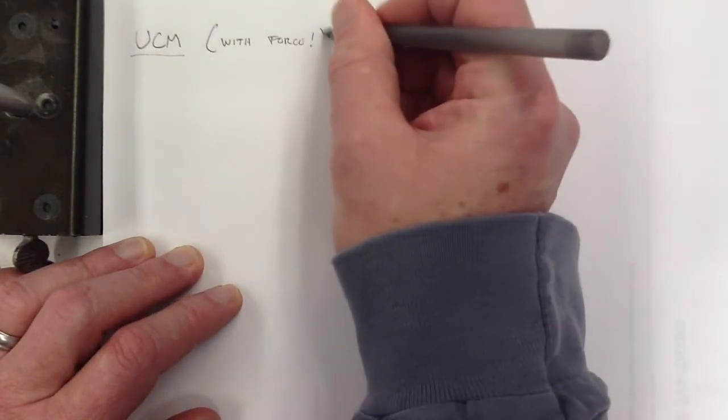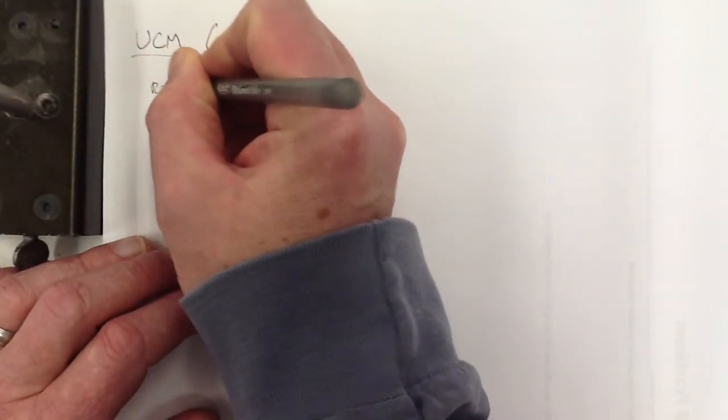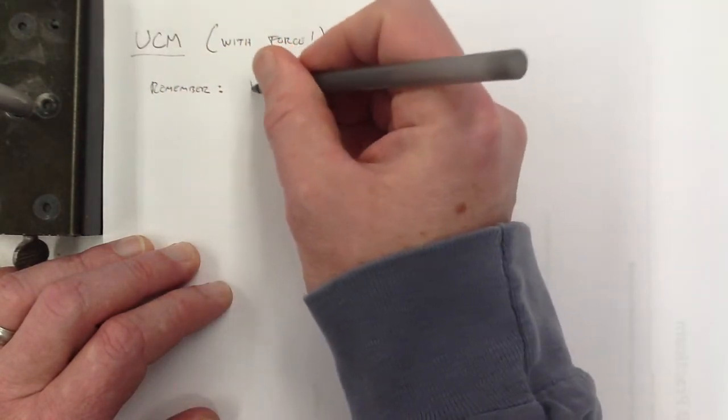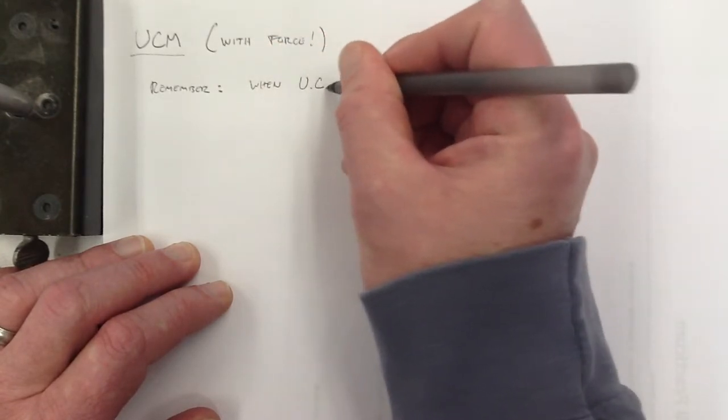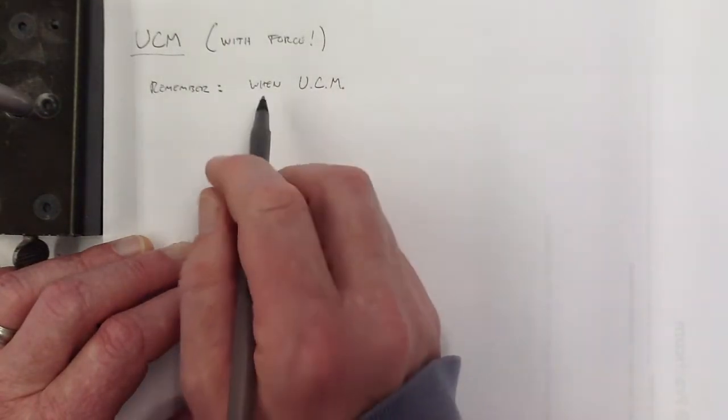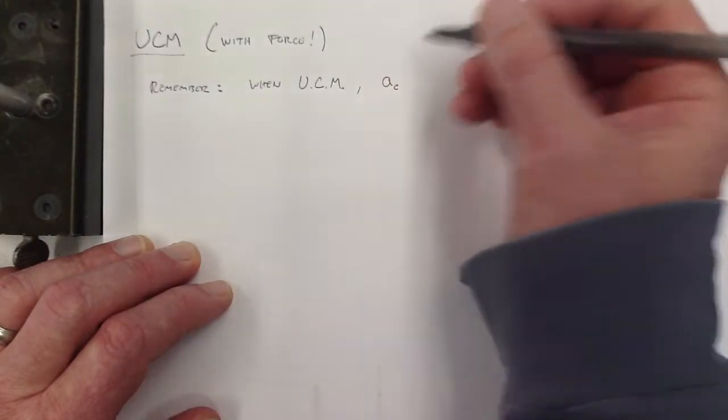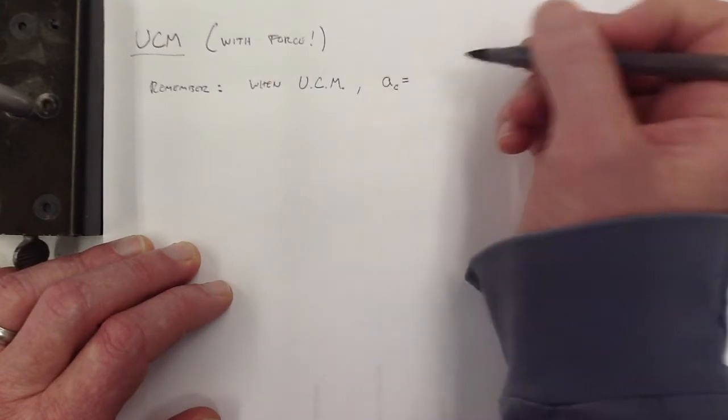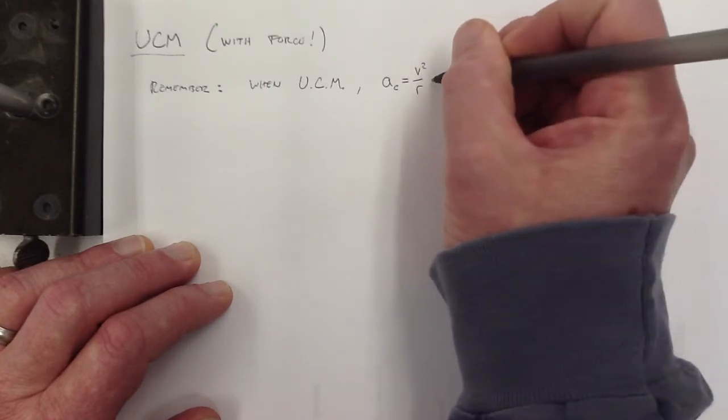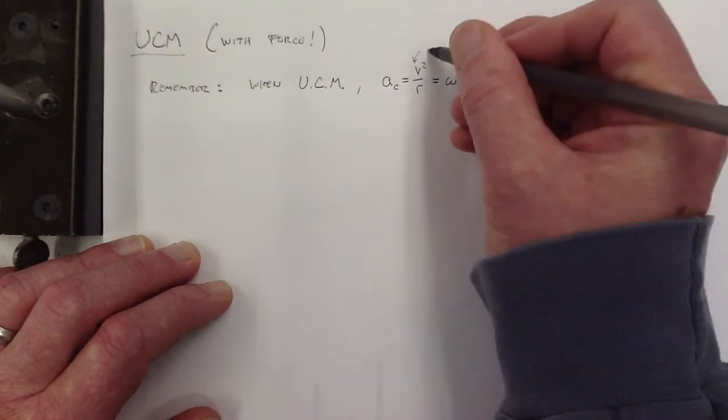I think that deserves a little enthusiasm, right? So remember that when you have uniform circular motion, I realize that's sort of awkward, incorrect grammar, but you know what I mean. When you have uniform circular motion, then you have a centripetal acceleration, which means it's directed toward the center of the circle, and the magnitude of it is v squared over r, or omega squared r.